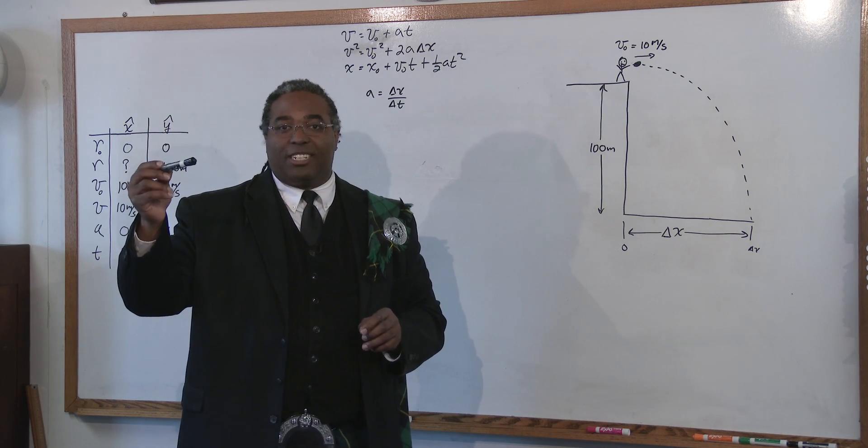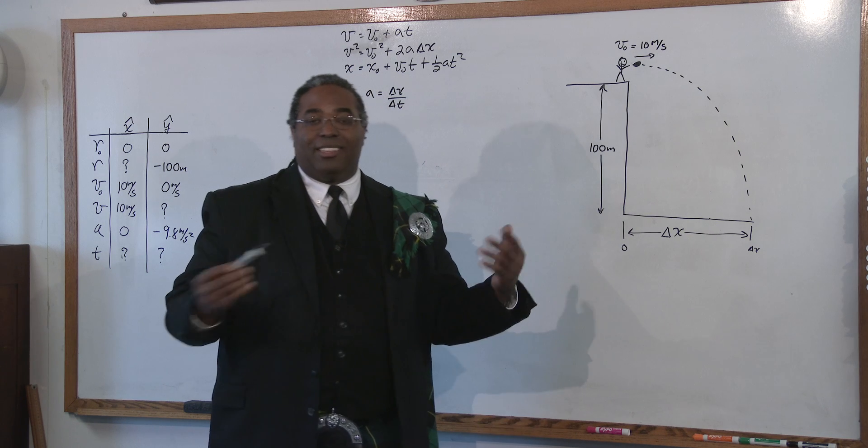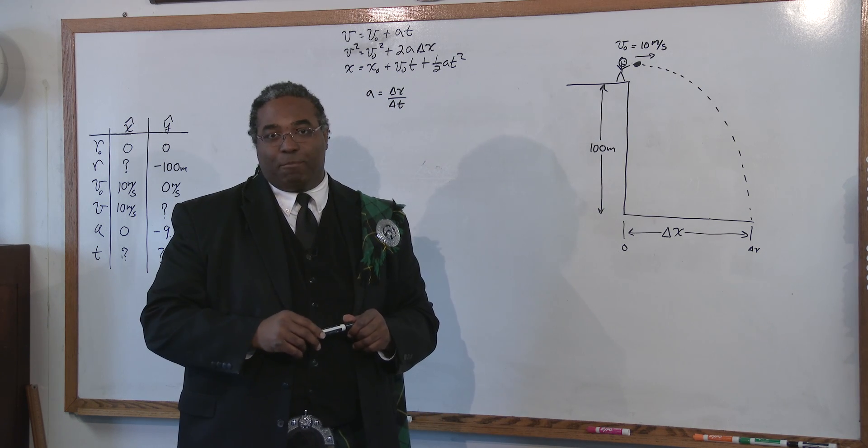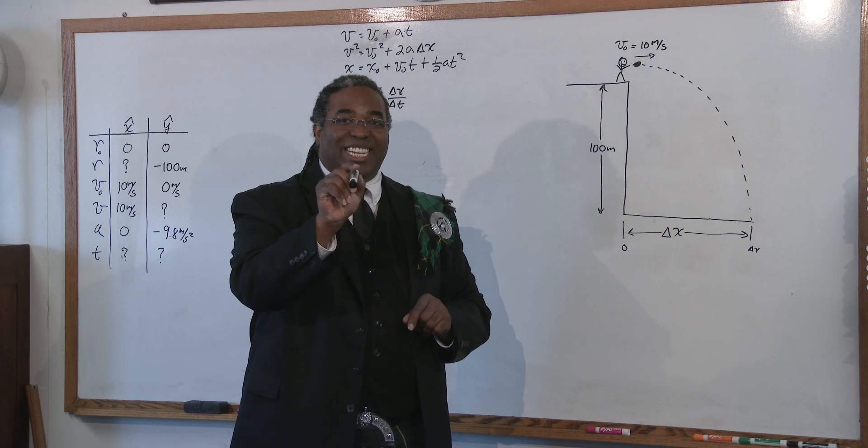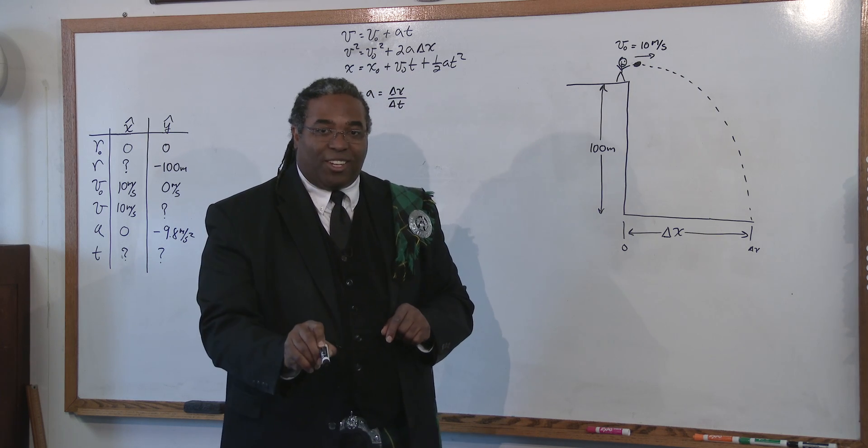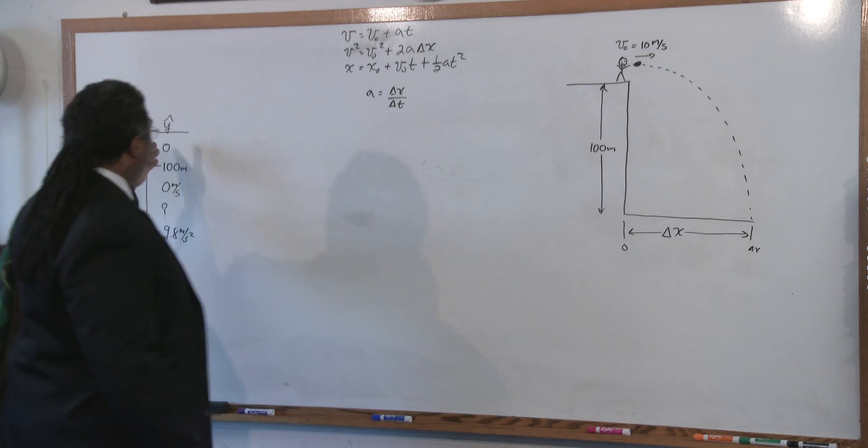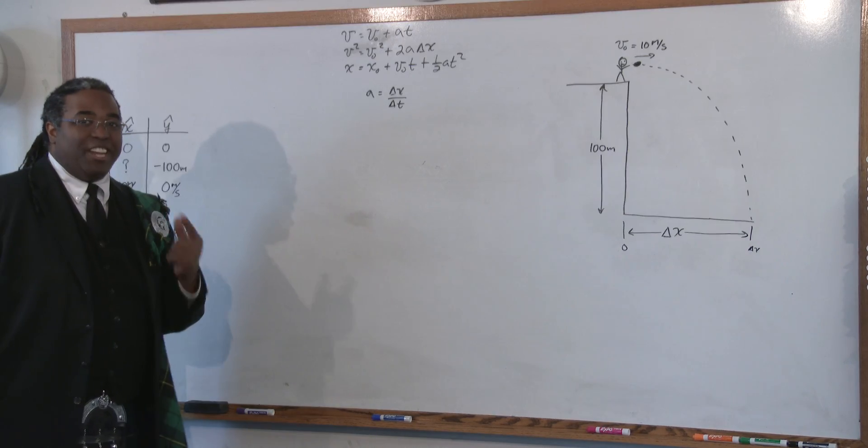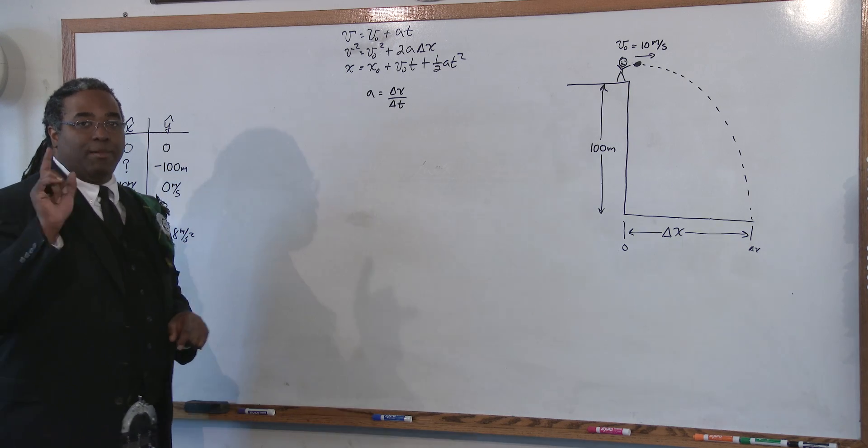Look, because the thing about projectile motion is, as it's falling, it's moving over. That's what makes it a projectile. So the time that it takes to move over is the same time that it takes to fall. So if we can solve for the time using our information in the y-axis, we can use that time to get the distance that it moves in the x-axis.